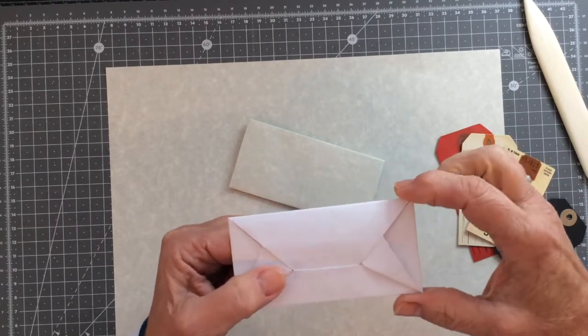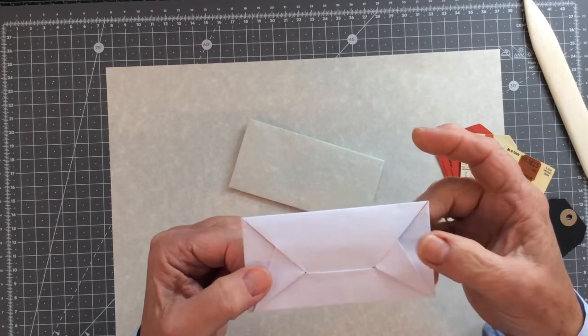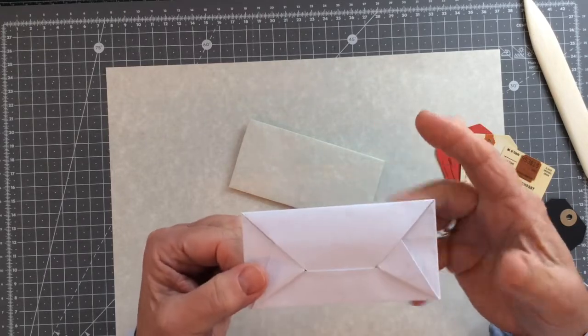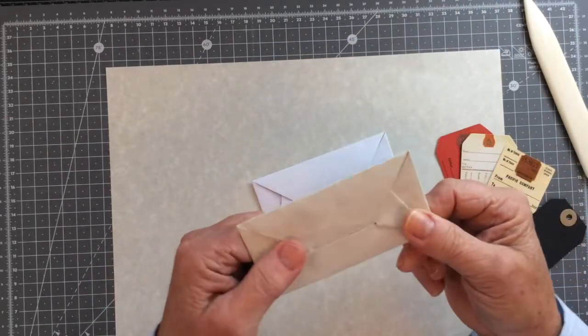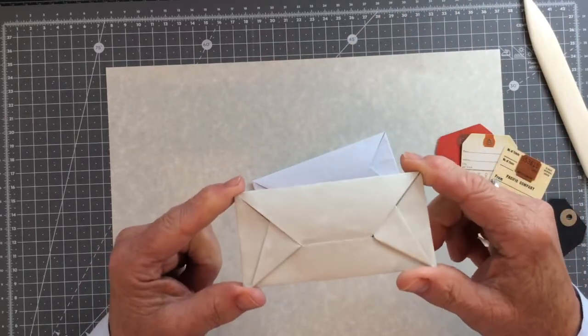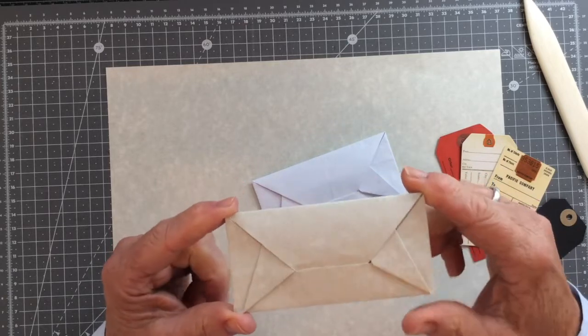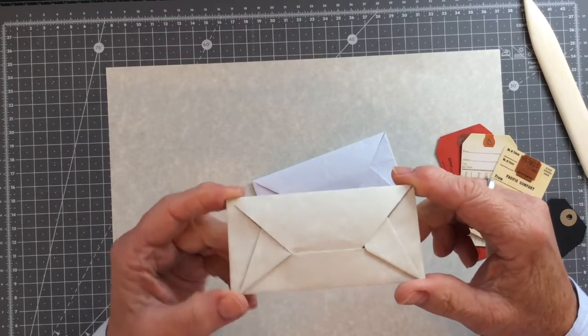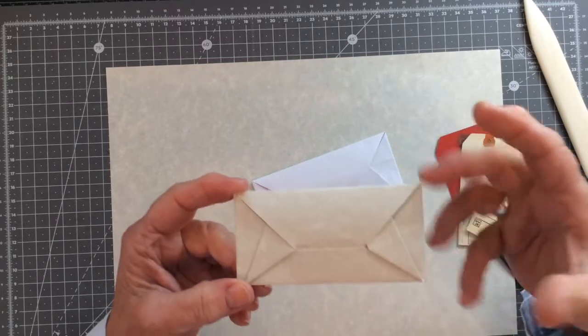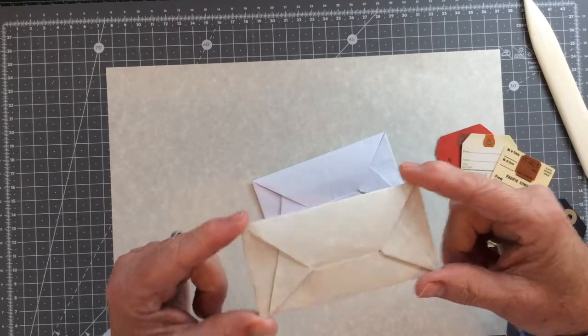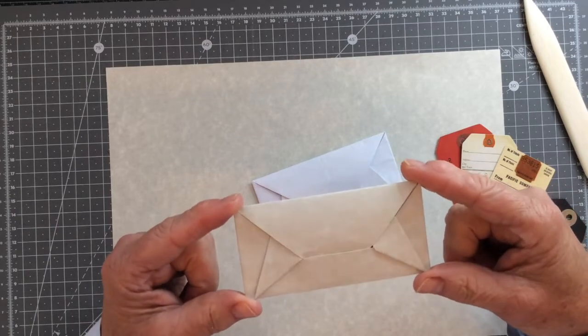If you wanted to use vintage book page, that tends to be thinner and that would be good to use. This one I've made with parchment paper and whilst I would use it in a journal, it is a little bit thicker than I necessarily would like. And so you've got to bear that in mind when you're thinking about the bulk in your journal.